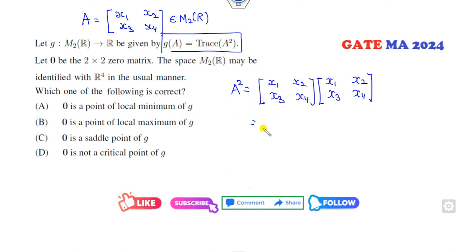Because I need the trace only, I can simply find the diagonal entries. So x1 squared plus x2x3, and this one will be x3x2 plus x4 squared. So what is my g(A) where A is x1, x2, x3, x4? This comes to be the sum of that, that is x1 squared plus 2 times x2x3 plus x4 squared.